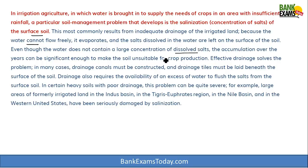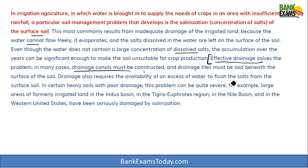To get rid of salinization, an effective drainage system is needed. Drainage canals must be constructed, drainage tiles must be laid beneath the soil surface, and an excess of water must be available to flush salt from the surface soil. In heavy soils with poor drainage this problem can be severe — examples include the Tigris-Euphrates basin, Nile basin, and western United States, where soil is seriously damaged by salinization.